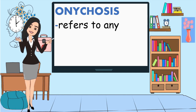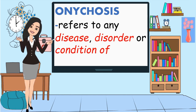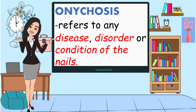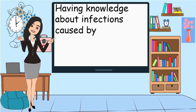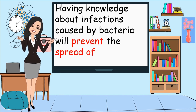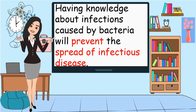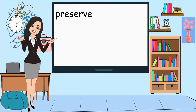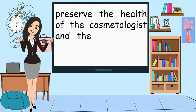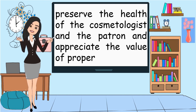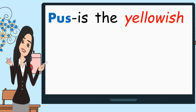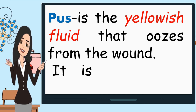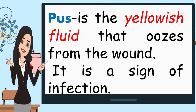Onychosis refers to any disease, disorder, or condition of the nails. Having knowledge about infections caused by bacteria will prevent the spread of infectious diseases. Pus is the yellowish fluid that oozes from the wound — it is a sign of infection.